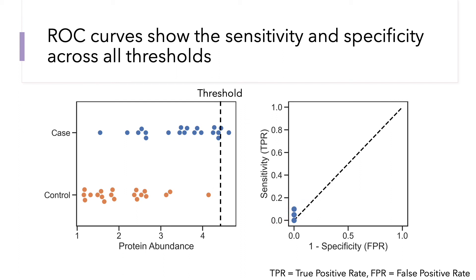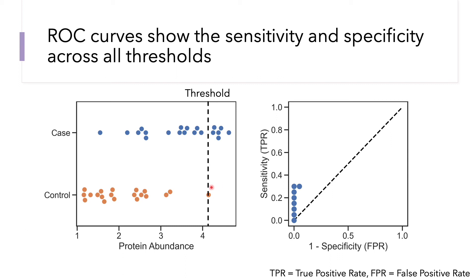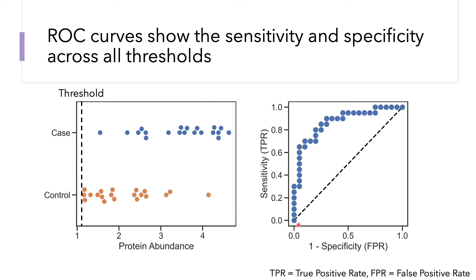We keep lowering the threshold, adding more and more points as we go. Eventually we hit our first control sample, which when classified as positive yields our first false positive. This creates a kink in the ROC curve as it increases the false positive rate without increasing sensitivity. We continue lowering the threshold to every data point, using every possible threshold, and when we plot all those points, our ROC curve takes shape — increasing in sensitivity while decreasing in specificity. Typically, folks don't plot every point but only a line connecting the points, giving us the familiar ROC curve.